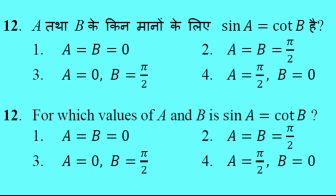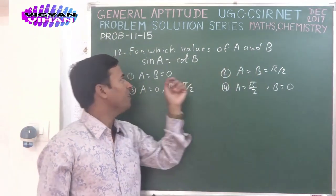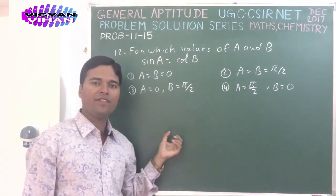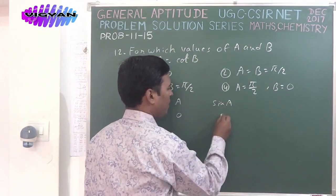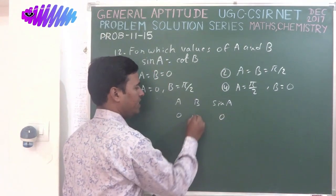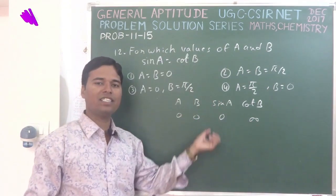Problem number 12: For which values of a and b is sin(a) equal to cot(b)? Option 1: a = b = 0. Option 2: a = b = π/2. Option 3: a = 0, b = π/2. Option 4: a = π/2, b = 0. Checking option 1 — if a = 0, sin(a) = 0, but if b = 0, cot(b) is infinite. So the condition is not satisfied by option 1. For option 2 — if a = π/2, sin(a) = 1, but cot(π/2) = 0, so the condition is not satisfied either.